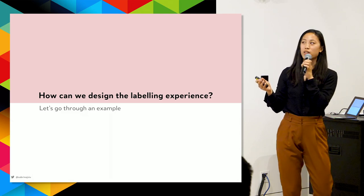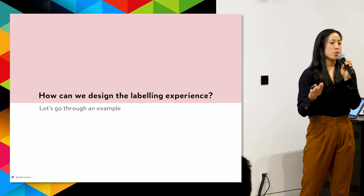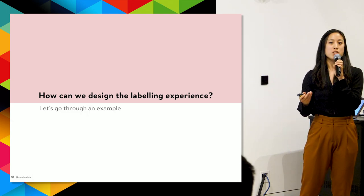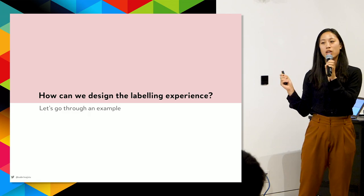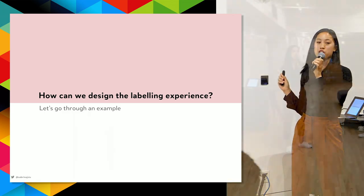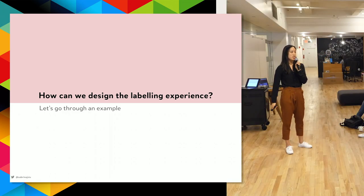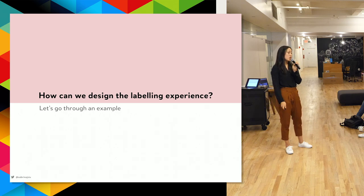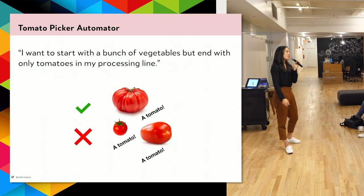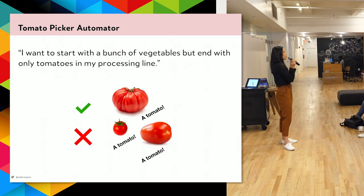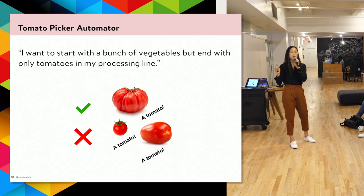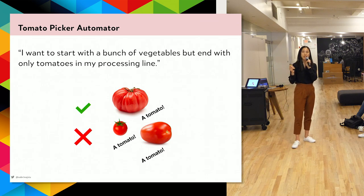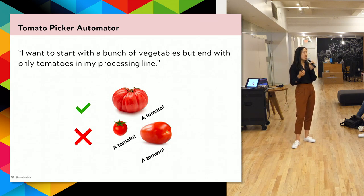Now that we've covered machine learning and UX design principles, how do we combine them to design an actual labeling experience? Back to our tomato example — let's assume the product I want to build is to automate tomato picking out of a bunch of vegetables, and I have some background knowledge about tomatoes.